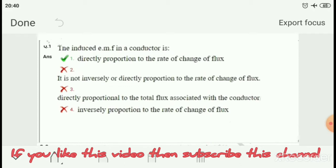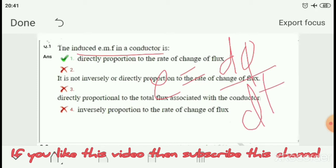Question number 1: The induced EMF in a conductor is? We know that induced EMF formula is E equals d phi by dt, which is the rate of change of flux. So induced EMF is directly proportional to the rate of change of flux. This is option number 1, directly proportional to the rate of change of flux. So option number 1 is right.